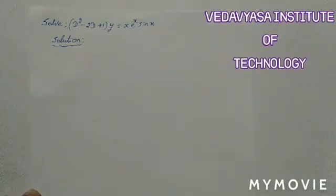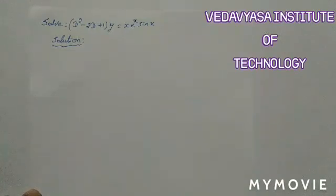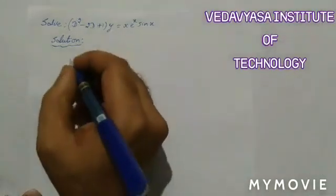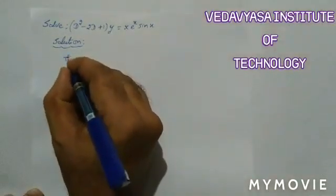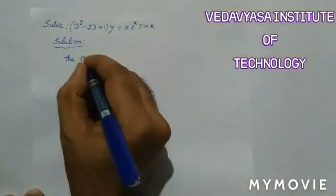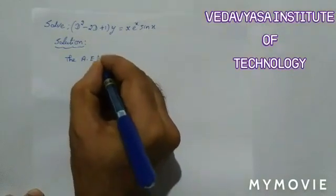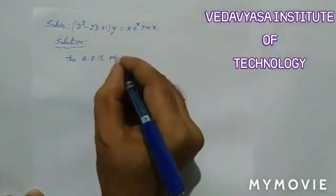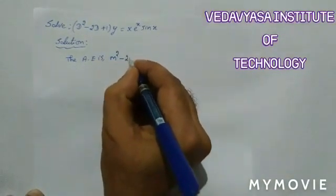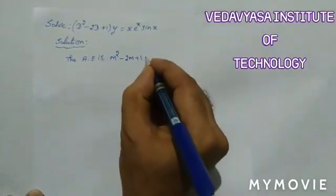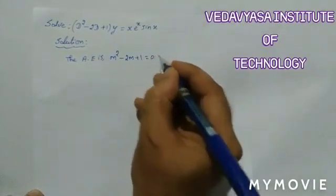To solve this differential equation, we have to find the complementary function and the particular integral. First, to find the complementary function, we need the auxiliary equation. The auxiliary equation is m² - 2m + 1 = 0.